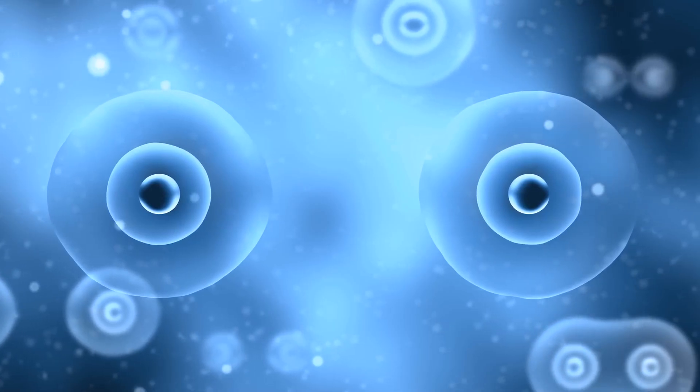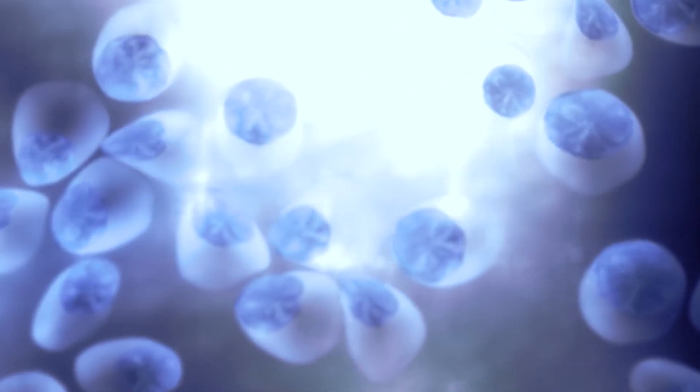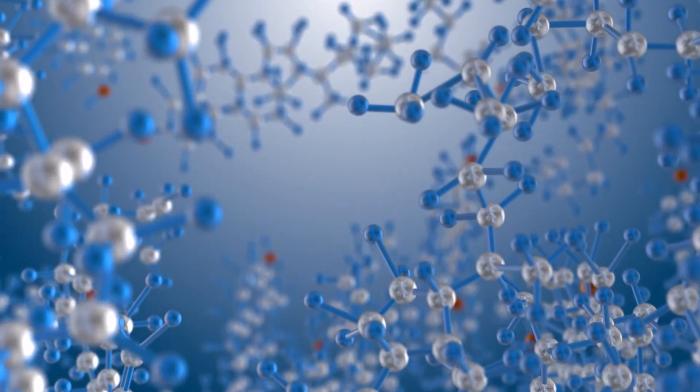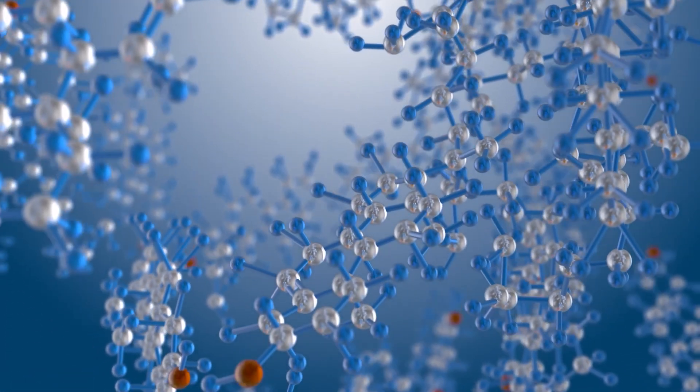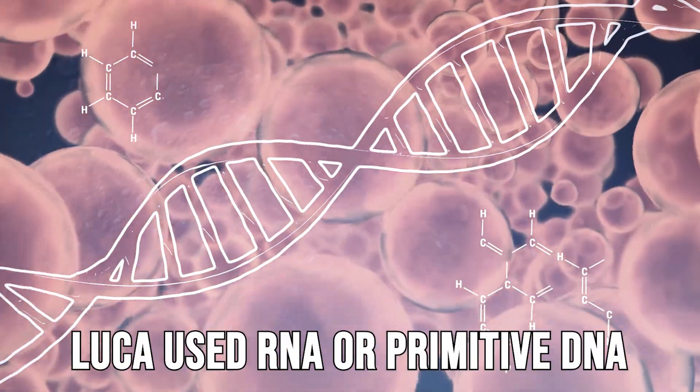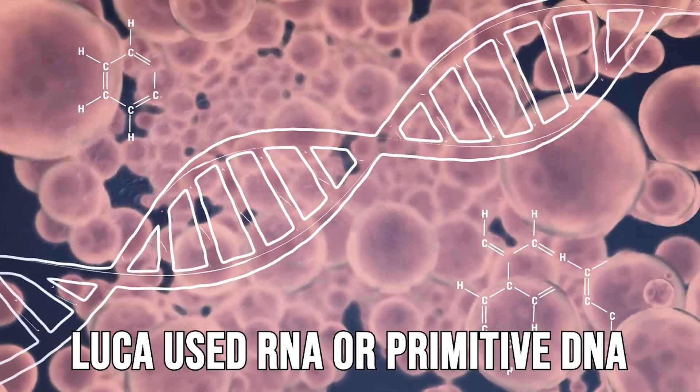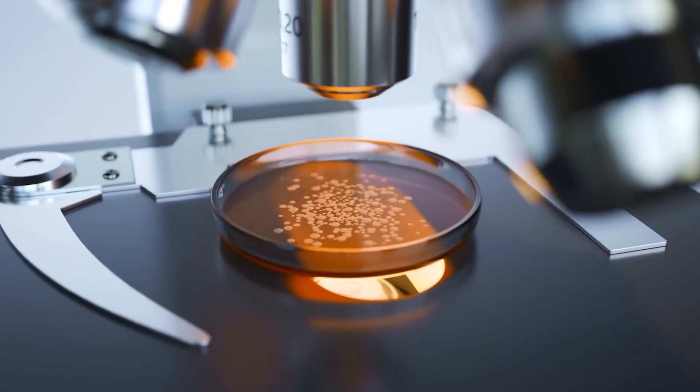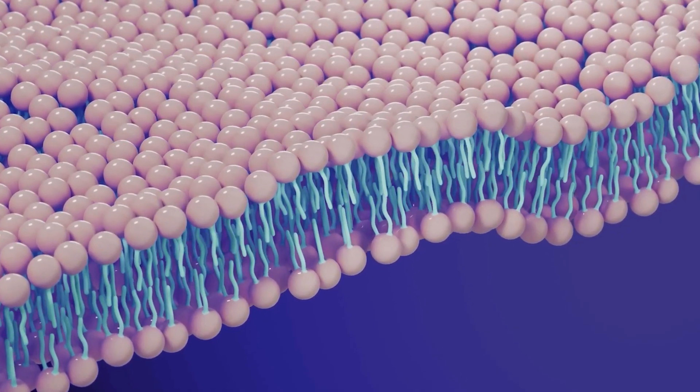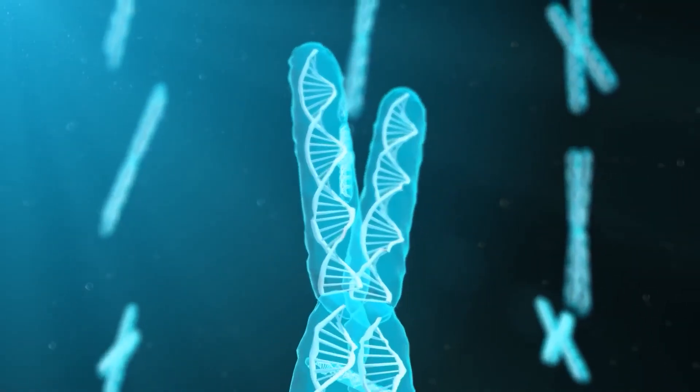But LUCA wasn't advanced. It probably floated freely in water. It had no brain, no limbs, no skeleton. Just a fragile membrane holding together molecules that knew how to copy themselves. LUCA used RNA or primitive DNA. It may have used iron and sulfur as fuel. It didn't breathe. It didn't eat. It reacted. And somehow, it persisted.